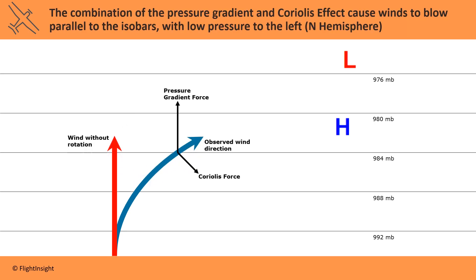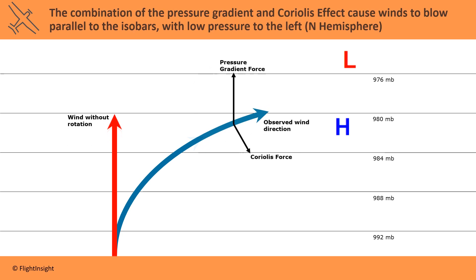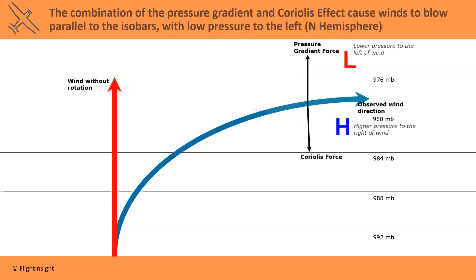So as the Coriolis veers the wind, it now blows parallel to the isobars instead of perpendicular. The combination of pressure gradient and Coriolis cause wind to flow so that lower pressure air is to the left and higher pressure air is to the right in the Northern Hemisphere.